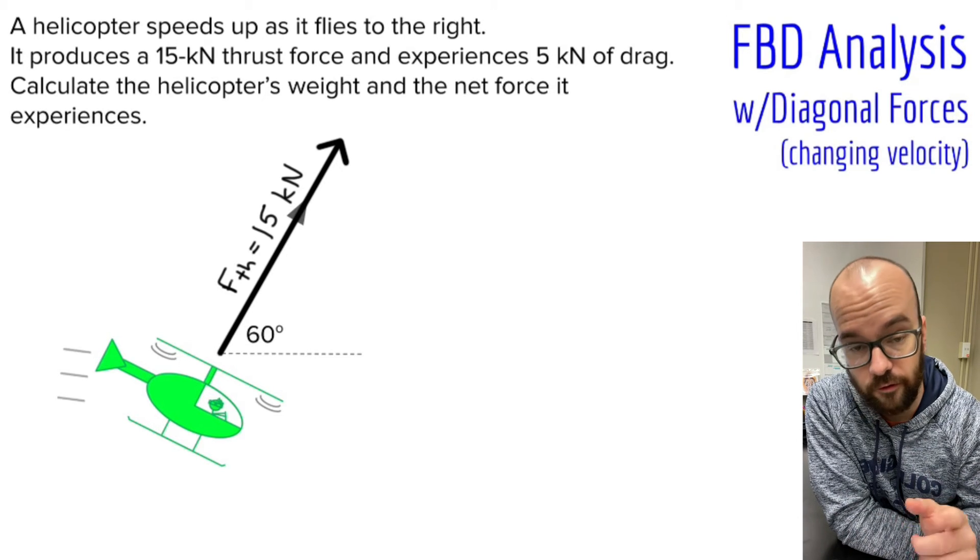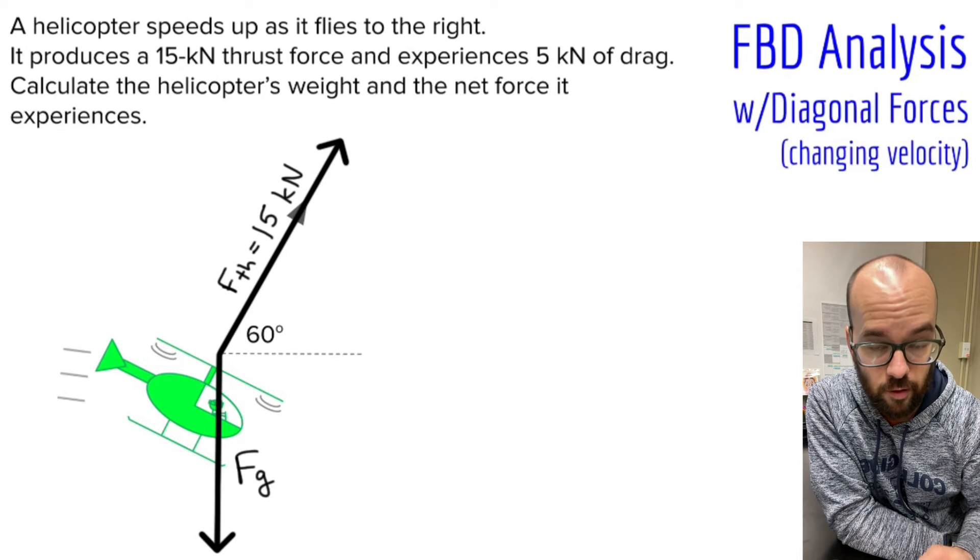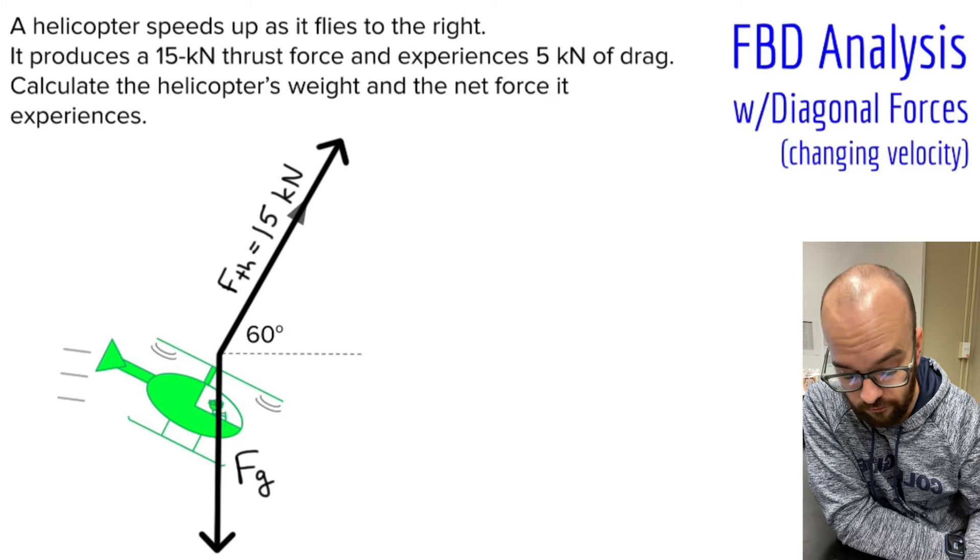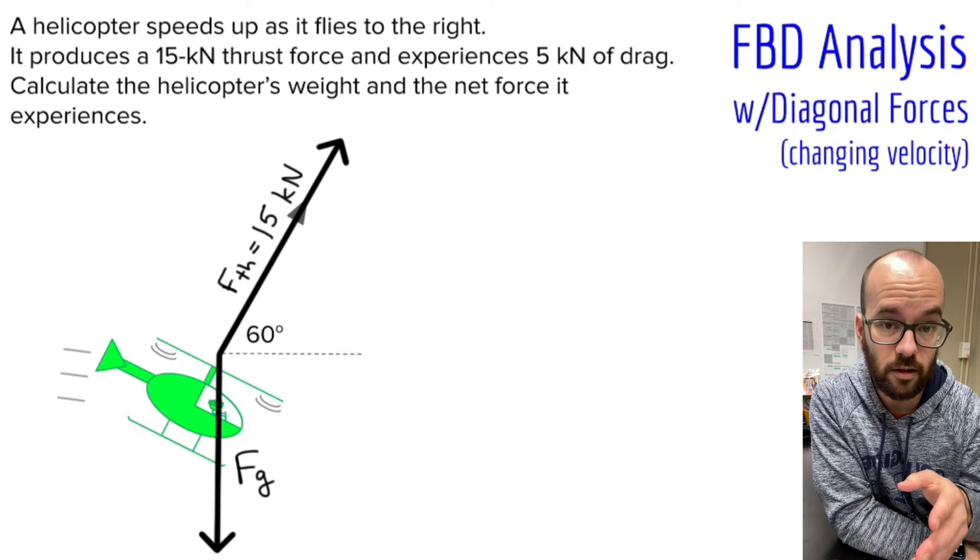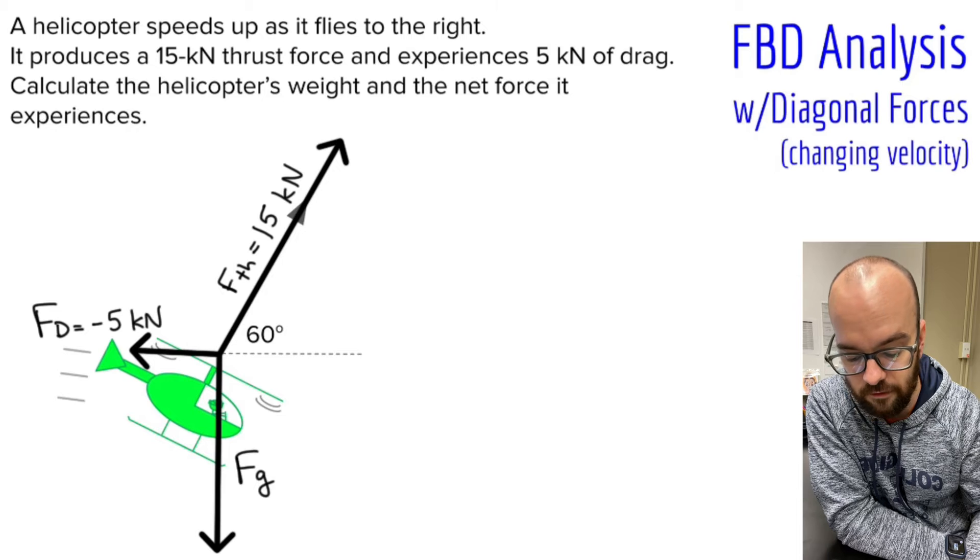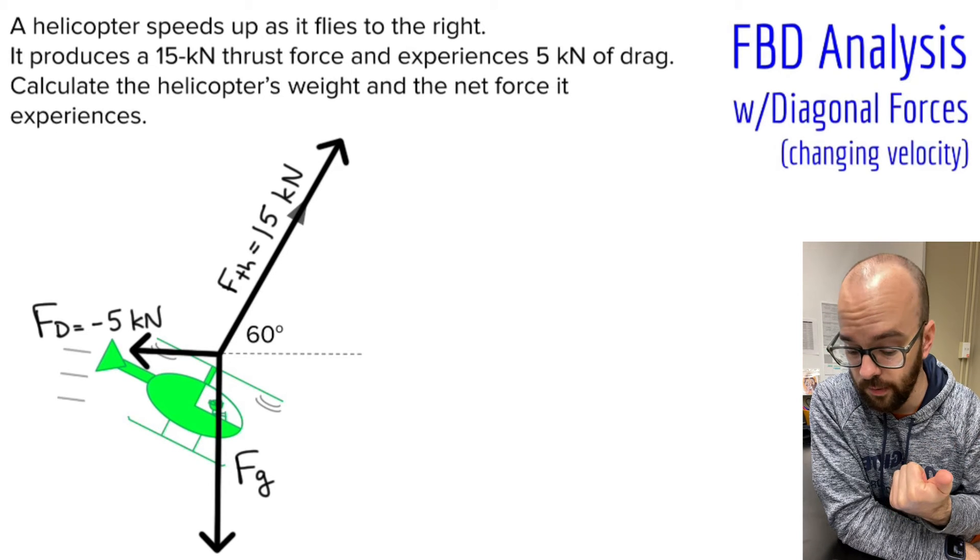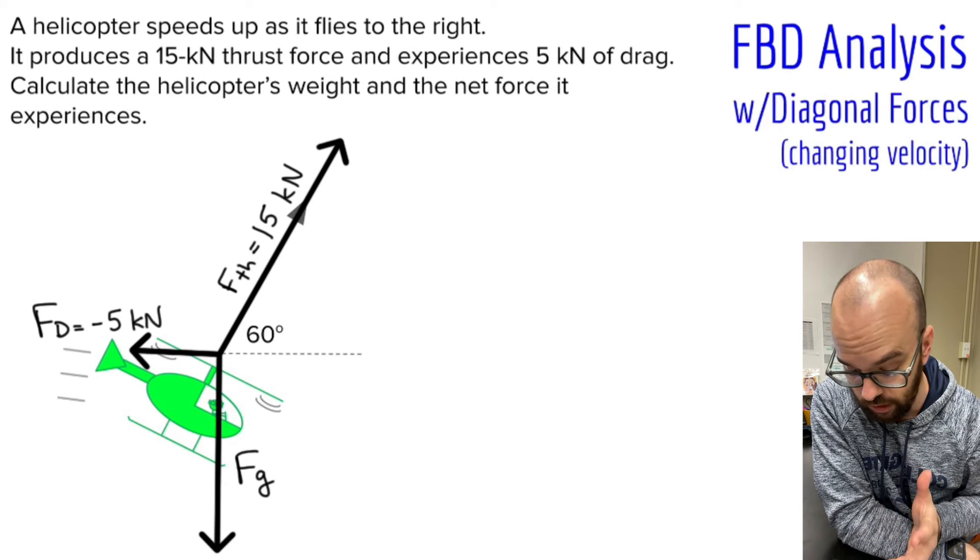Other forces acting on it: we have the force of gravity, which is downward. We don't know what the magnitude of that force is yet. Then we have five kilonewtons of drag. Because the helicopter is moving to the right, the drag is going to be to the left. Because it's to the left, I'm going to define that as negative 5 kilonewtons. There's no normal force because the helicopter is not touching any physical surface, and there's no friction for the same reason.